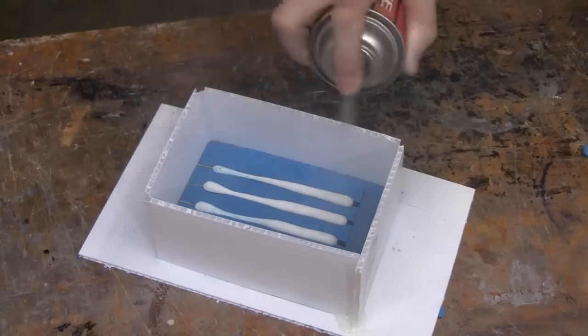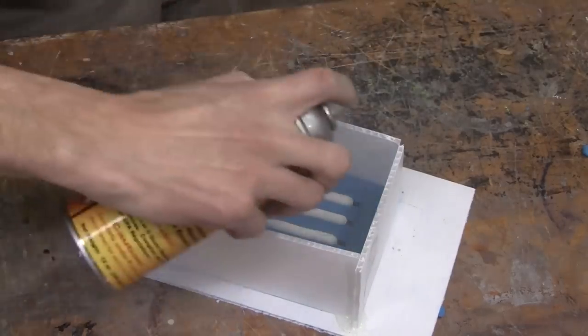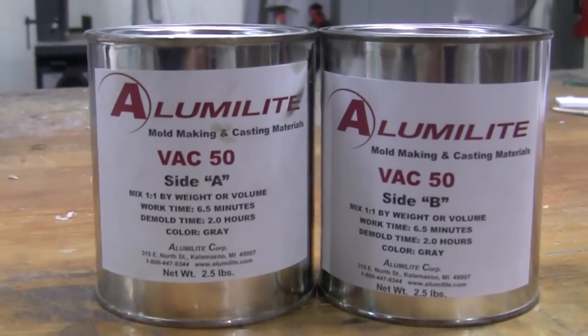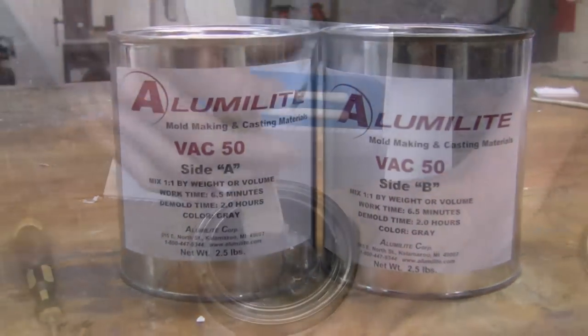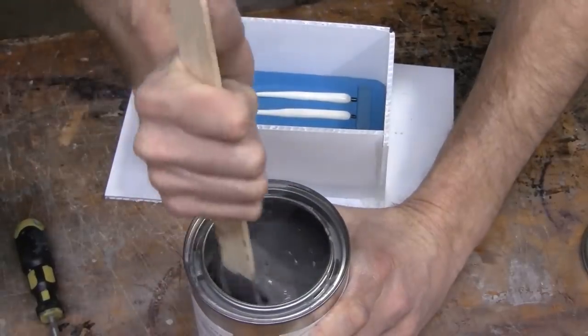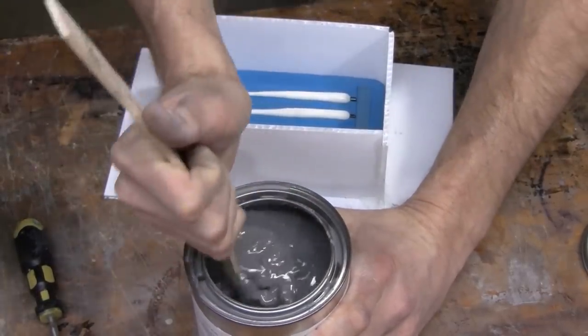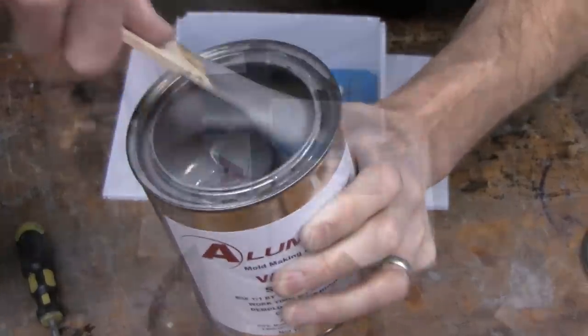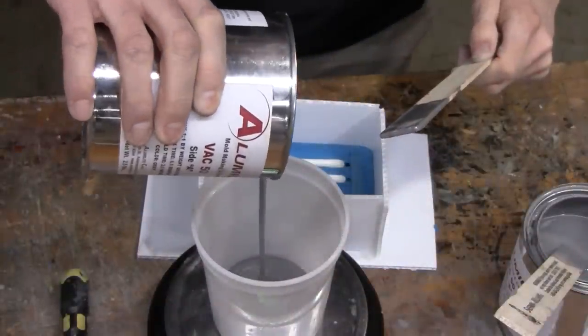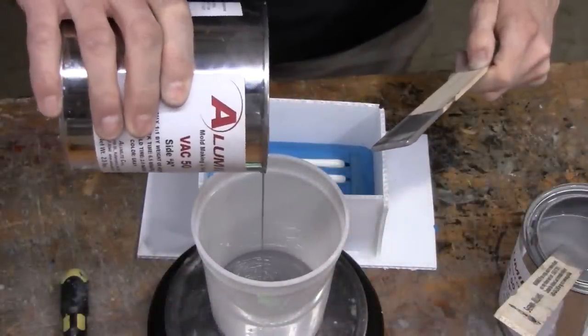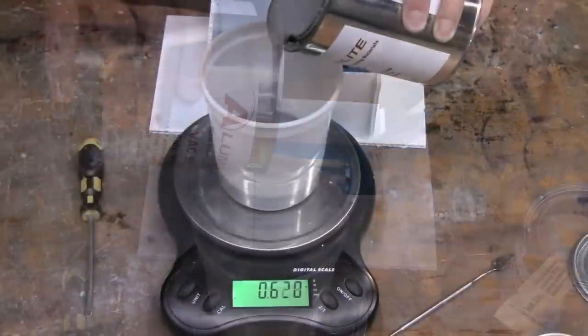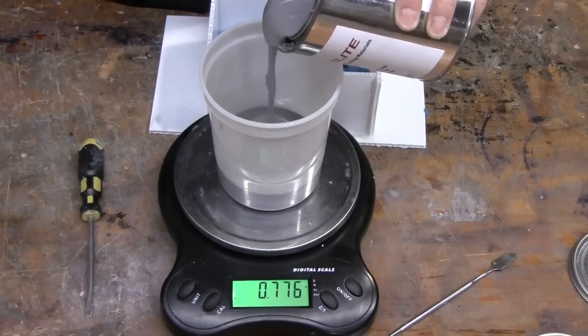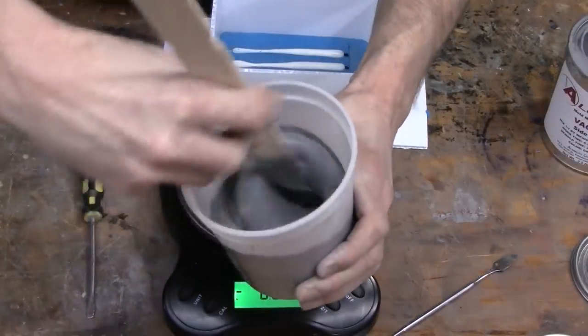Now we're ready to mix up the VAC50. When you first open the lid, you'll see that the material is separated. The atomized aluminum powder and the fillers that are used in the VAC50 settle to the bottom. Agitate these back up and continue to mix it until it's a creamy, smooth consistency. Then simply mix the resin one to one by weight, mix it thoroughly, and you're ready to pour it.